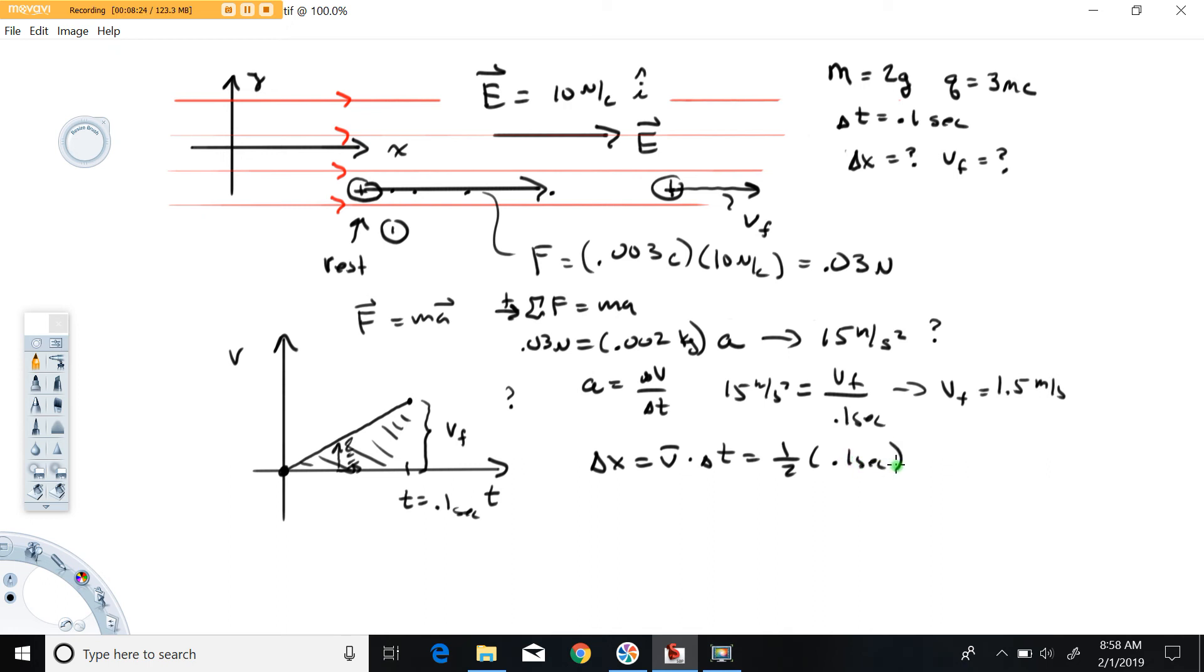This area right here will give the total net displacement, and that's a triangle. So one half the base is 0.1 seconds times the height 1.5 meters per second. Let's see, this is going to be 0.75 times 0.1, that's 0.075 meters, and there is our delta x.